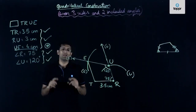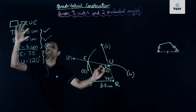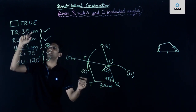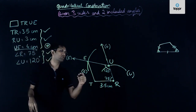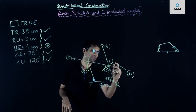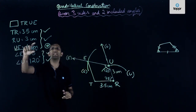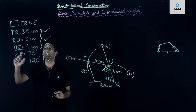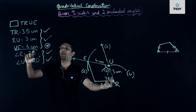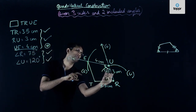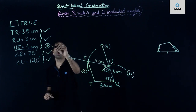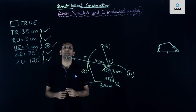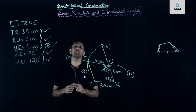Let us verify that we have labeled all dimensions correctly. TR is labeled as 3.5 centimeters, RU is labeled as 3 centimeters, and UE is labeled as 4 centimeters. Measure of angle R is 75 degrees and measure of angle U is 120 degrees — both already labeled. We have used all the given information correctly and our quadrilateral is now ready.